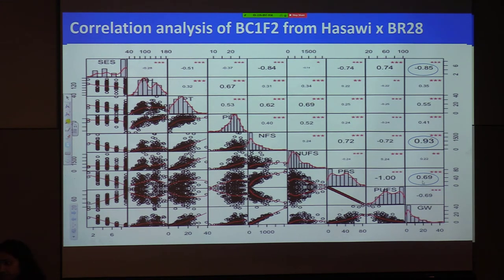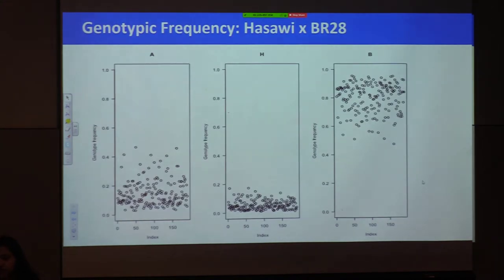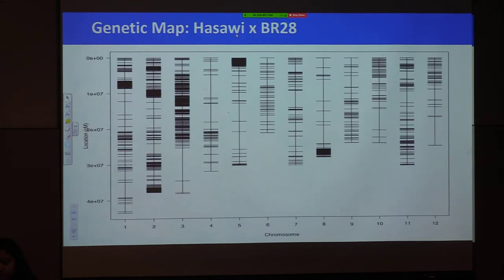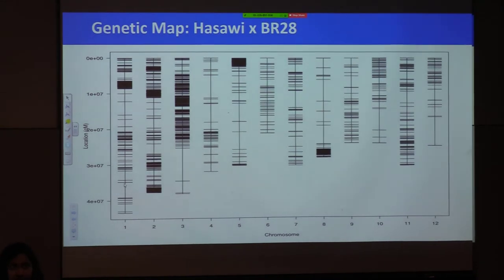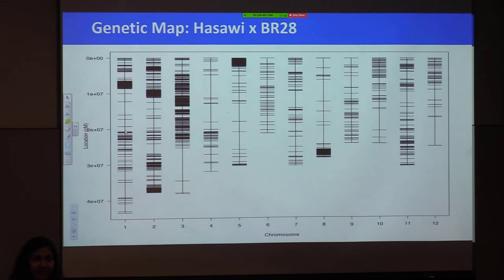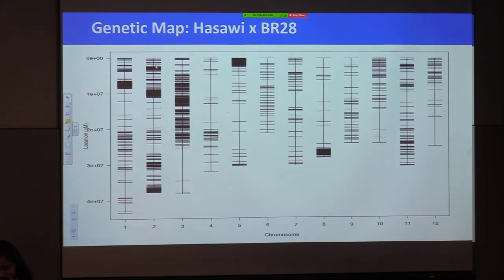From now on I'll show results from Hassawi × BRRI Dhan 28, as the CSR 28 analysis is still continuing. Looking at genotypic frequency, as expected for a backcross population, the frequency from recurrent parent B is much higher — around more than 0.8. The genetic map shows the physical positions of approximately 9,101 markers distributed across 12 chromosomes. I got this data just two or three days ago, so initial filtering has been done and further filtering will make it cleaner — this is very preliminary.